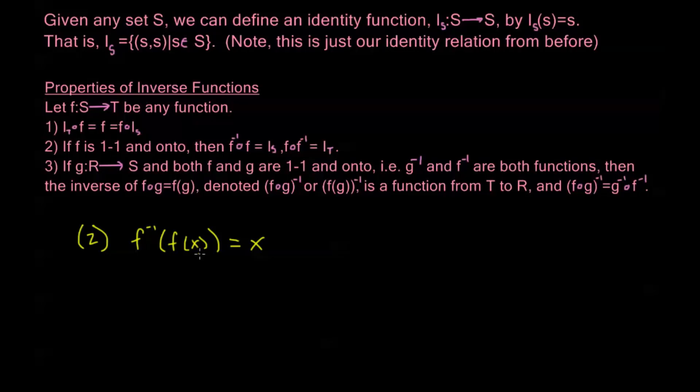And if I have the other one, if I have F of F inverse of some Y, that's just going to be Y. In other words, I can cancel out this F and F inverse, and I just get the identity mapping on my codomain T.